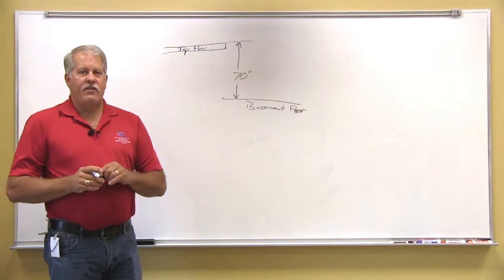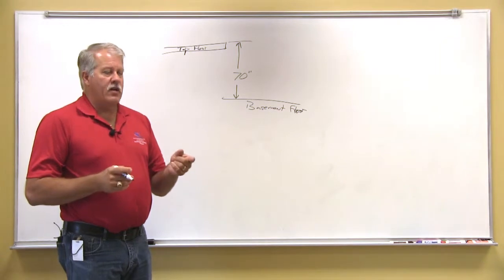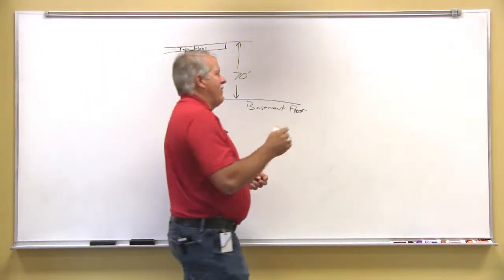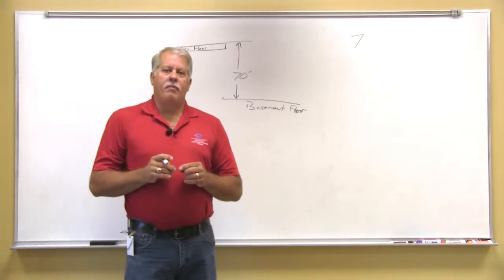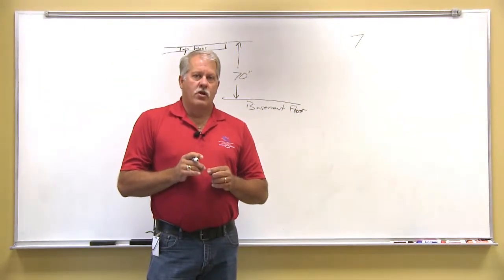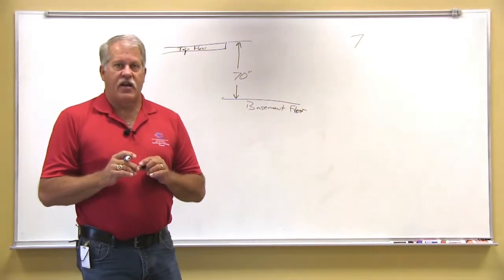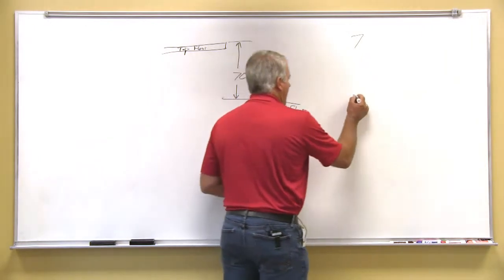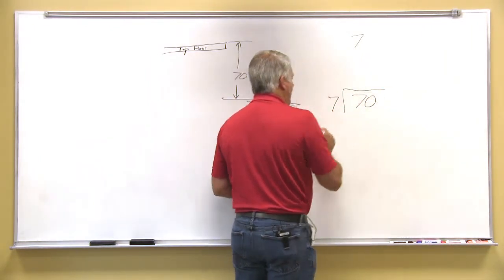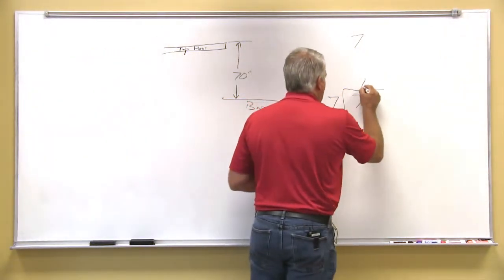Okay, with 70 inches in mind, the next principle that you have to consider that we've already talked about is the 7. Seven is the benchmark that we want to use for the individual riser for each stair. So you take the total height and you divide it by 7. That will give us 10.